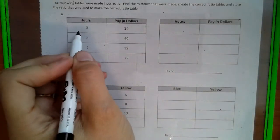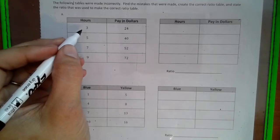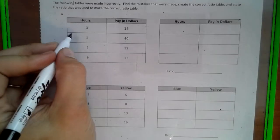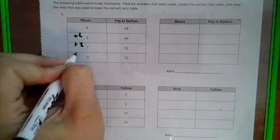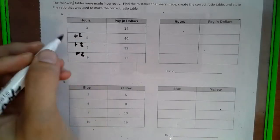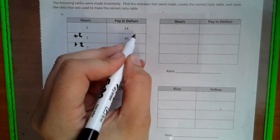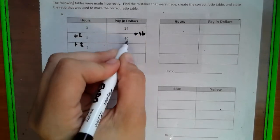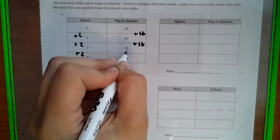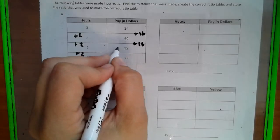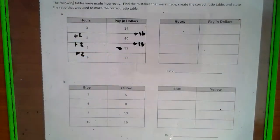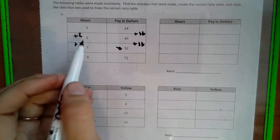So first thing I look at is my vertical patterns, just to check. 3 goes to 5 by adding 2, adding 2, adding 2. So that is okay so far. Then we look here and we say okay 24 gets to 40 by adding 16, but 40 doesn't add 16 to get to 52. So something's got to be wrong roughly here.